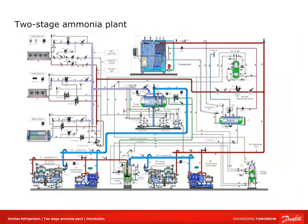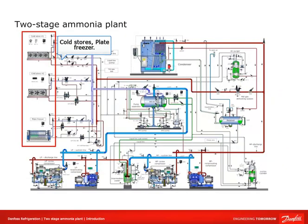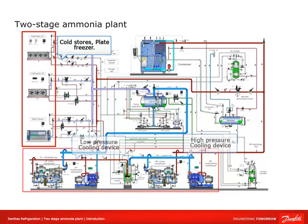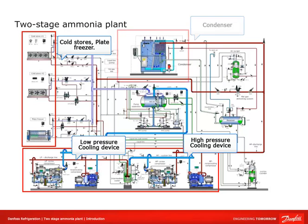Here you can see a schematic diagram of a two-stage ammonia plant. We have cold stores and a plate freezer, two cooling devices — a low-pressure cooling device and a high-pressure cooling device — and a condenser.